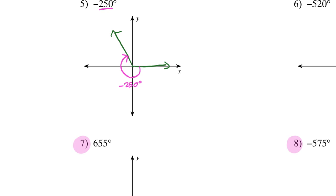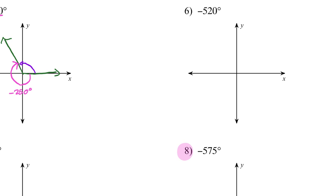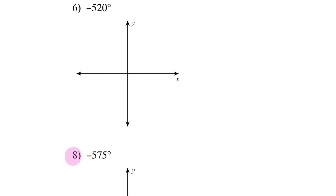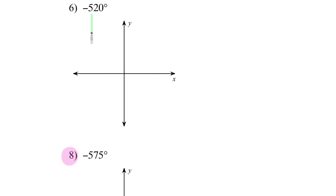In the next lesson we're going to study coterminal angles. As you can see, if I go in the other direction — the positive direction — I get an angle that also finishes in the same place. That's what's called a coterminal angle. We'll go more in depth on coterminal angles in the next unit.